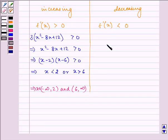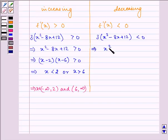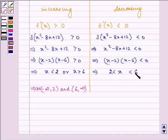Now, in the same manner, we will be finding it for the decreasing function also. So we have 3(x² - 8x + 12) less than 0. This implies x² - 8x + 12 is less than 0. This implies (x - 2)(x - 6) is less than 0. So this implies x is greater than 2 or less than 6.